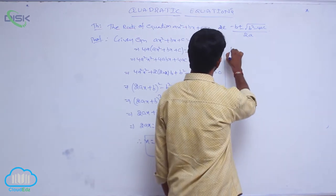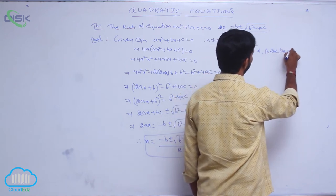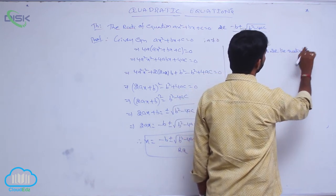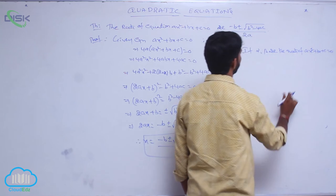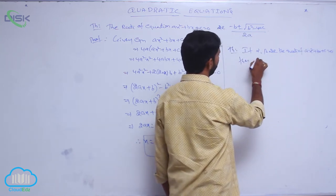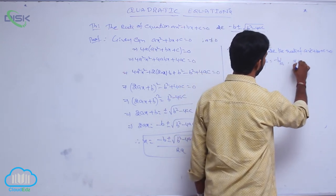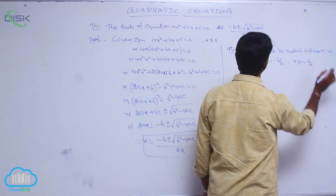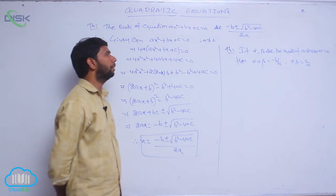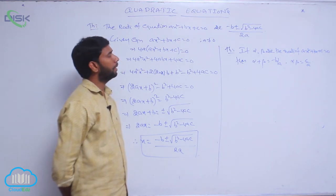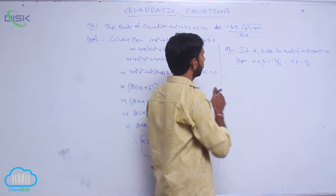Next, if α and β are the roots of equation Ax² + Bx + C = 0, then the sum of roots α + β = -B/A, and the product of roots αβ = C/A.